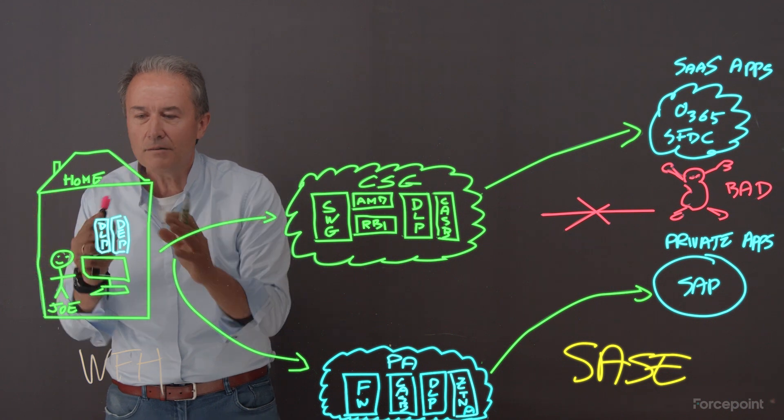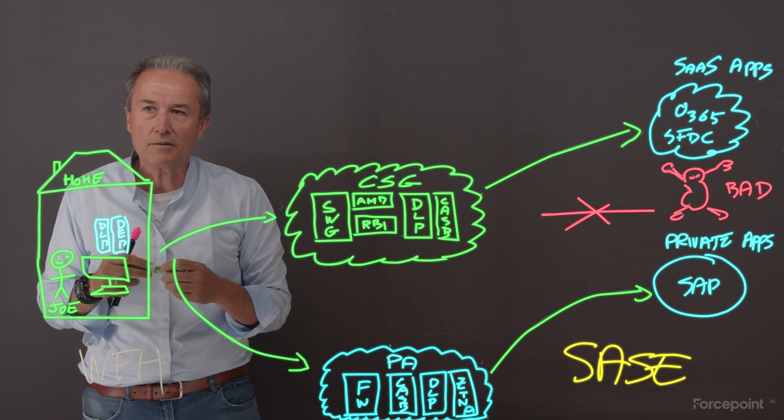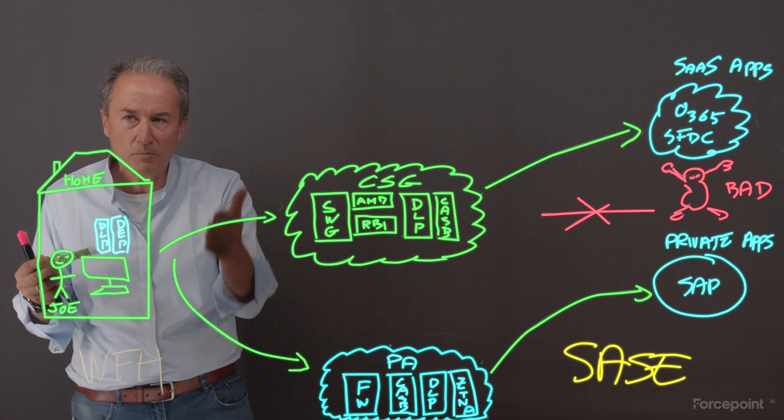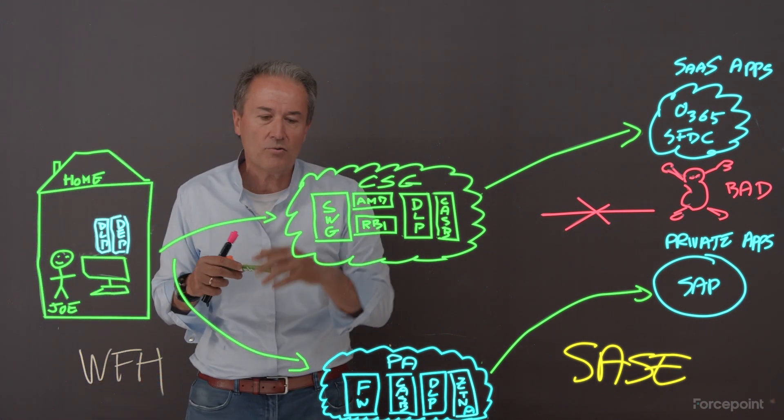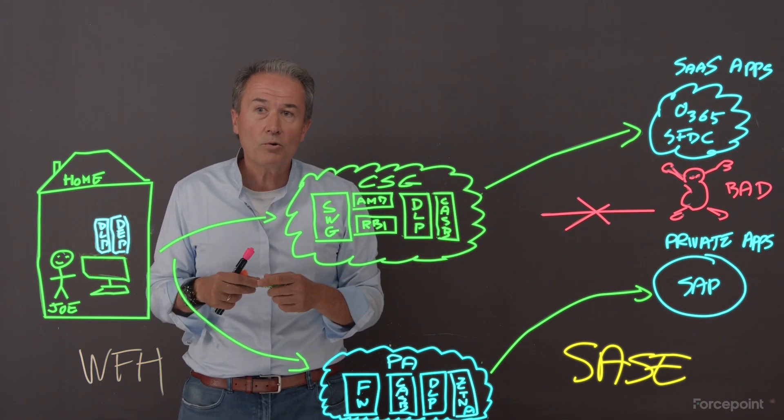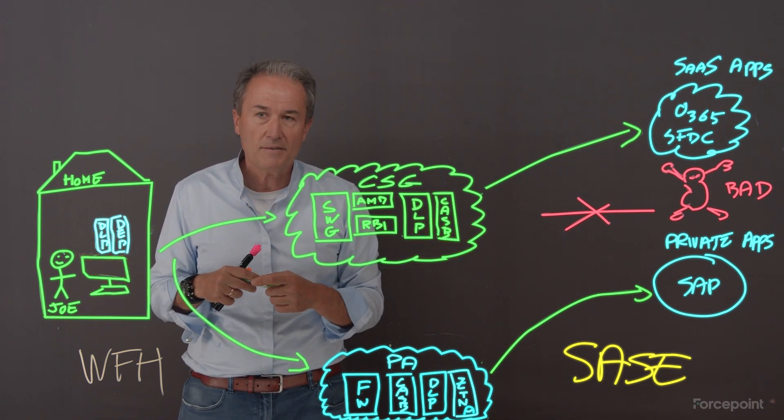Remember how convenient that integrated agent is. You want a unified agent that can do all these things, not just traffic steering. You want it to be intelligent and a bit data centric. So if you look at that picture, you have a really comprehensive SASE solution.